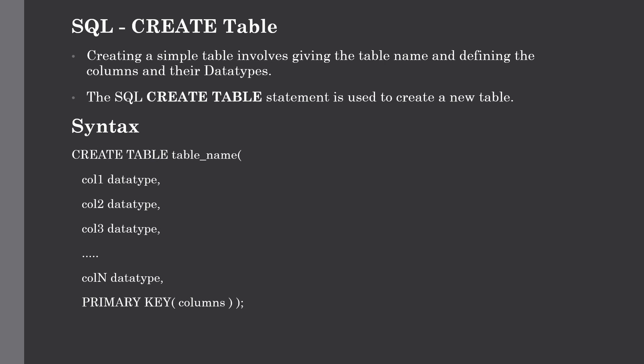Now we will create our first table using the CREATE statement. Creating a simple table requires three major inputs: a table name, the columns you want, and the data type for each column. The syntax is: CREATE TABLE followed by the table name, and in brackets, provide column names and their data types. You can also assign constraints such as a primary key, which we will discuss in upcoming topics.